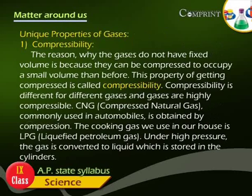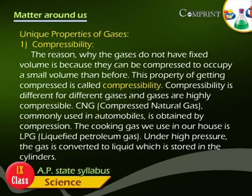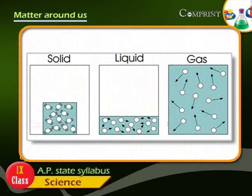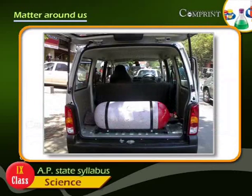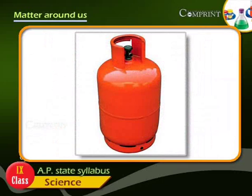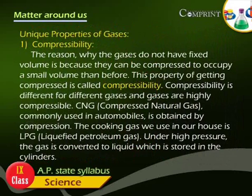Unique properties of gases — compressibility: The reason why gases do not have fixed volume is because they can be compressed to occupy a smaller volume than before. This property of getting compressed is called compressibility. Compressibility is different for different gases, and gases are highly compressible. CNG is commonly used in automobiles. The cooking gas we use in our house is LPG; under high pressure, the gas is converted to liquid, which is stored in cylinders.